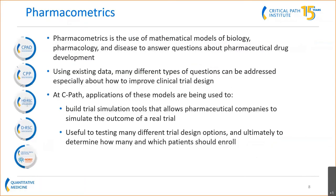The first area I'd like to discuss is pharmacometrics. This is a discipline in the pharmaceutical sciences that makes use of mathematical models of biology, pharmacology, and disease to answer questions about the drug development process. These models are built on existing data and can answer many different questions, but we're really focused on how to improve clinical trial design, especially for phase 3 studies, which are so hard to design. At CPAS, we have several applications of these models being used primarily to build clinical trial simulation tools.